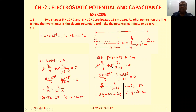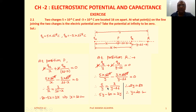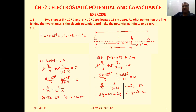At position R: KQ1/Y + KQ2/(Y - 16) = 0. Taking K common and cancelling it, substituting Q1 and Q2, and cancelling 10⁻⁸, we get 5/Y - 3/(Y - 16) = 0, which gives 5/Y = 3/(Y - 16). Solving this gives Y = 40 cm. So the other point where the resultant potential is zero is at 40 cm from charge Q1, or 24 cm from charge Q2.